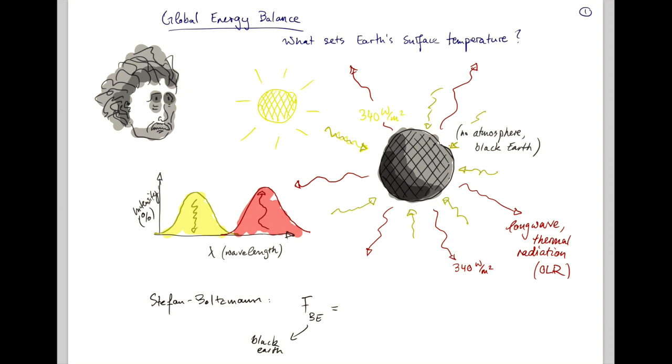has to equal sigma, Stefan-Constant, times T, surface temperature of black Earth, to the power of 4. And we know FBE, that's 340 watts per meter squared, and we know the constant sigma.